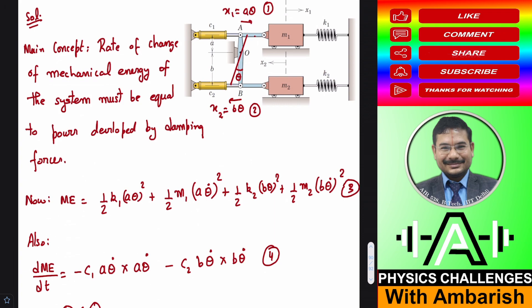So that's the main concept, rate of change of mechanical energy of the system must be equal to the power developed by the damping forces. Now what's the mechanical energy? See, if it moves by a distance a theta, the spring gets compressed by a theta and therefore the potential energy stored in the spring is half k1 a theta squared. And if its displacement is a theta then its velocity is a theta dot, where theta dot represents d theta by dt, just the derivative of a theta, a is a constant, so the derivative of theta is theta dot, so half mv squared for this becomes half m1 into a theta dot squared plus similar terms for the second block, for the second block this displacement is b theta and therefore the spring energy is half k2 b theta squared plus its kinetic energy half m2 b theta dot squared.